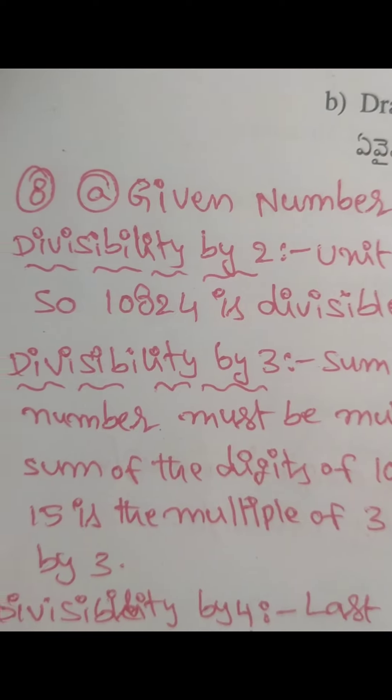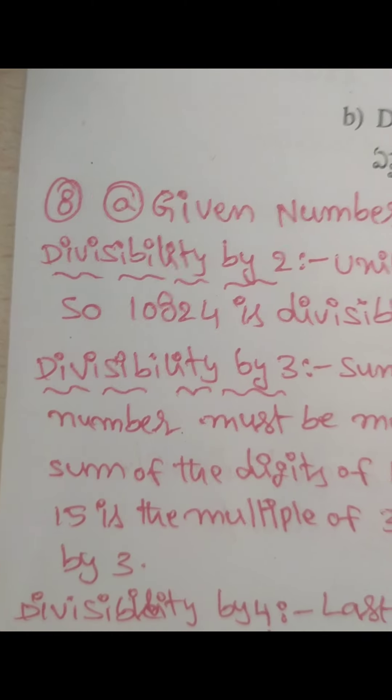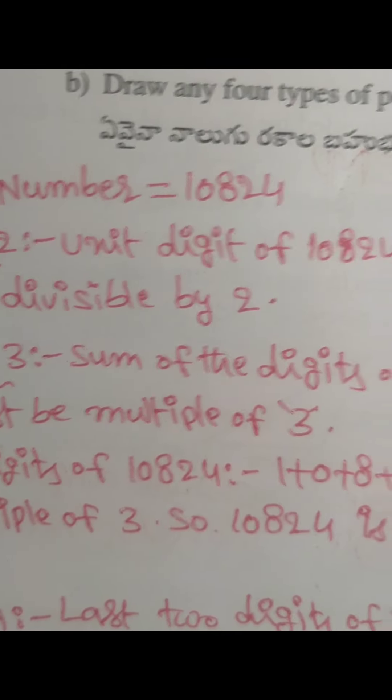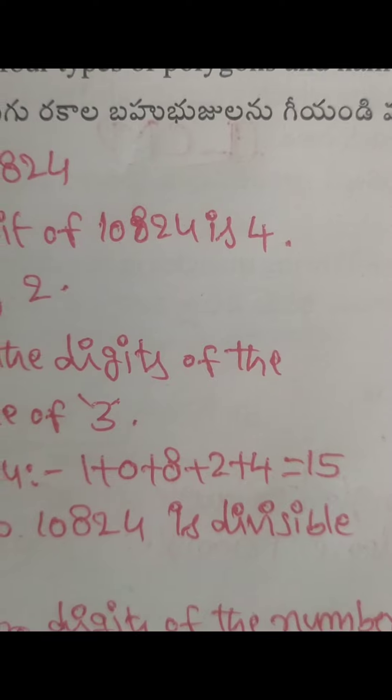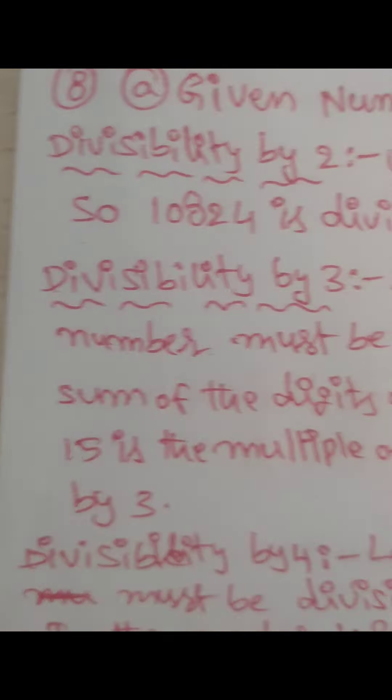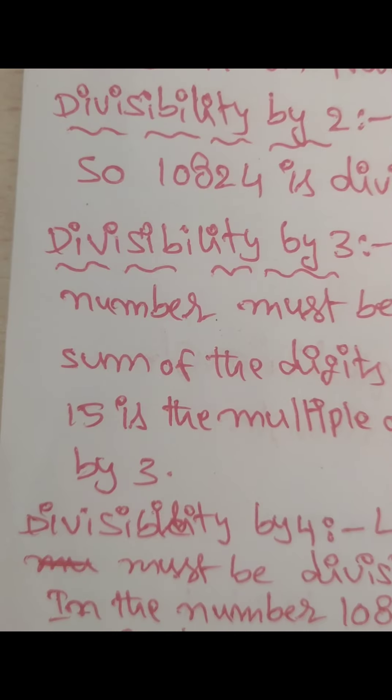Check divisibility by 3. Sum of the digits of the number must be multiple of 3. First, let's take what is the sum of the digits of the given number: 1 plus 0 plus 8 plus 2 plus 4 equal to 15. 15 is the multiple of 3. So the given number is divisible by 3.